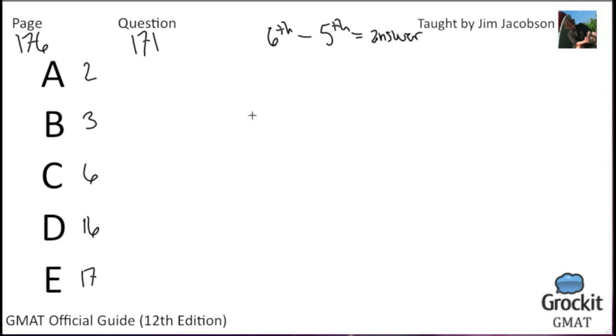The 6th term in the sequence is then equal... the nth term, you replace n with whatever term you're trying to figure out. That would be 6 plus 2 to the 6th minus 1, minus the 5th term, which would be 5 plus 2 to the 5 minus 1, because again, we're replacing the number of the term every place where it says n. So that's, of course, 6 plus 2 to the 5th minus 5 plus 2 to the 4th.